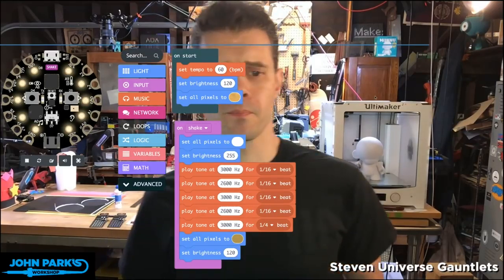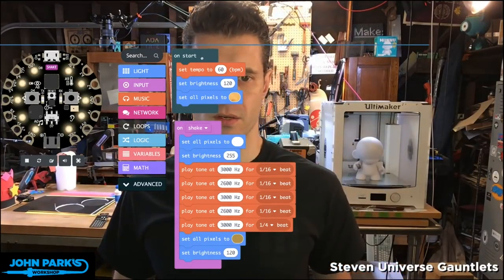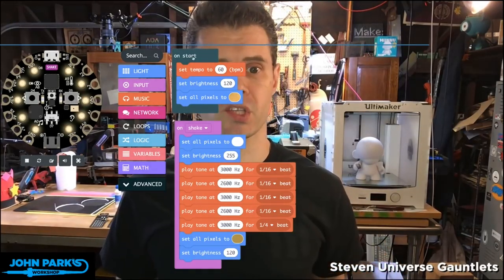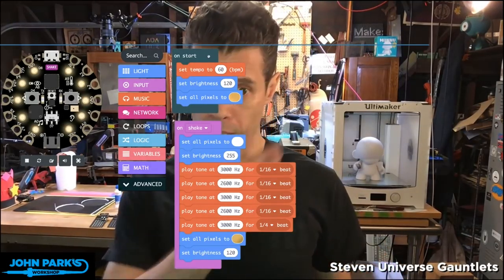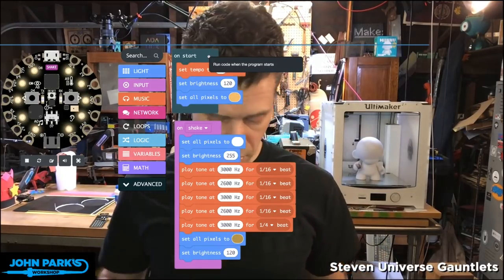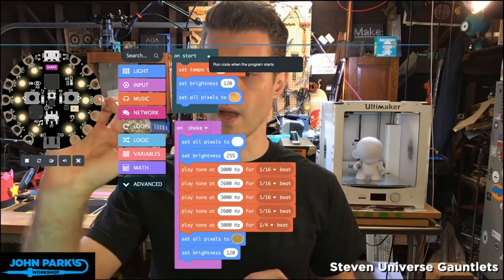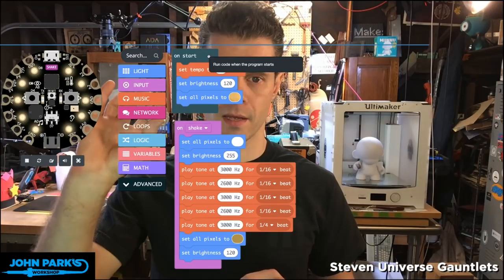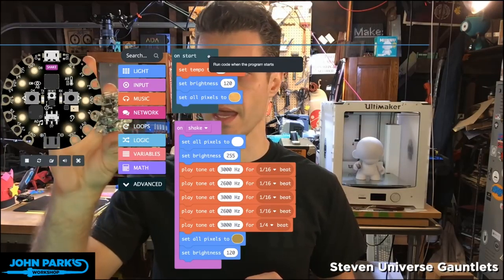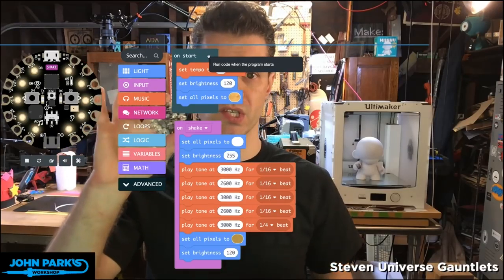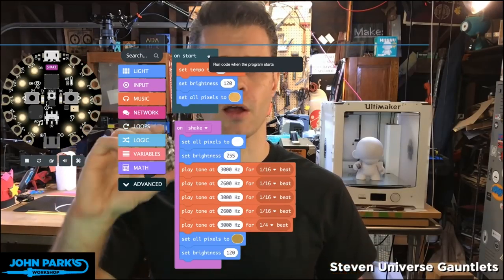This is our start loop. So what we're going to do is we want to create code so that our Circuit Playground Express, when it's running, it's going to be a yellow glow. So we're going to use this to sort of backlight the star on the gauntlet that we make.